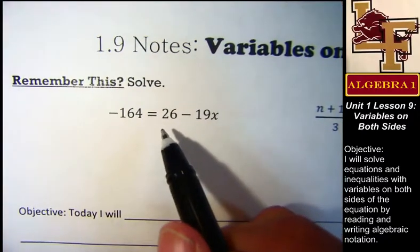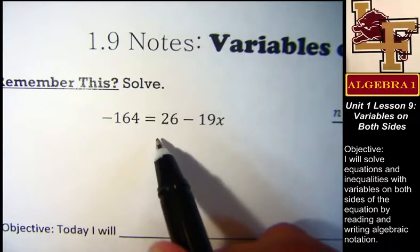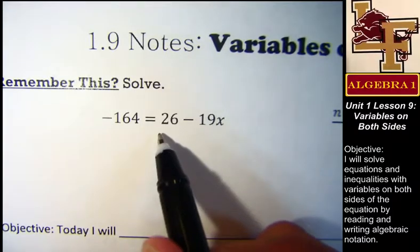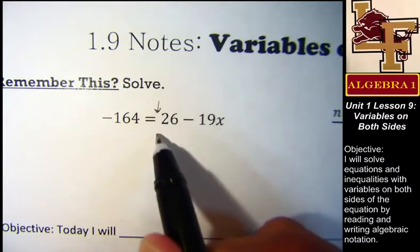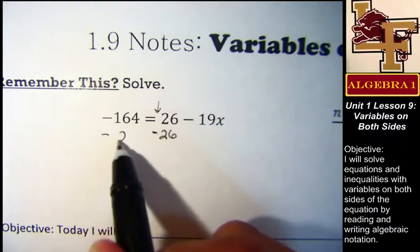What's the first thing I should do on this? You should add 26. Add or subtract? Subtract. Yeah, subtract because the sign is positive there, so I'm going to subtract 26 from both sides.